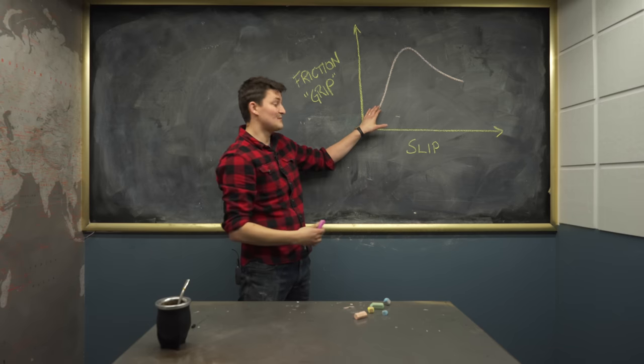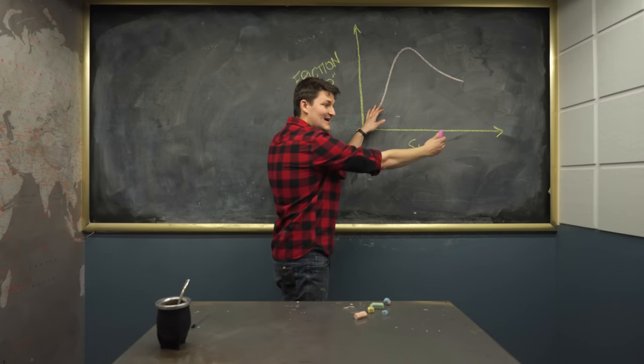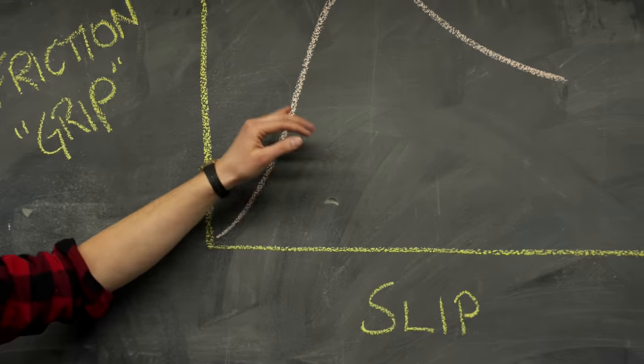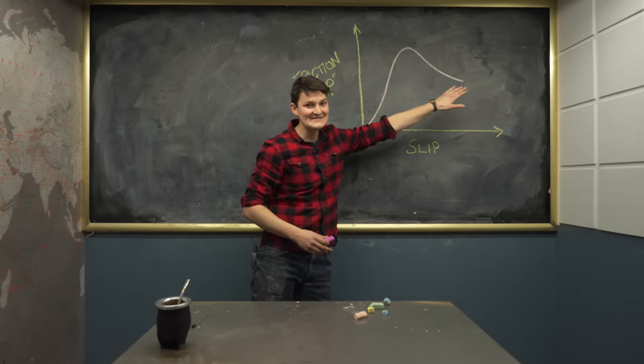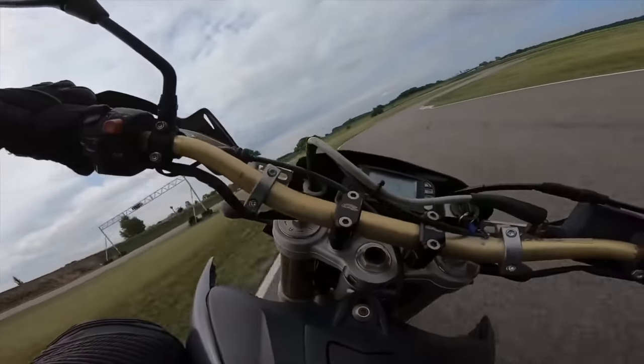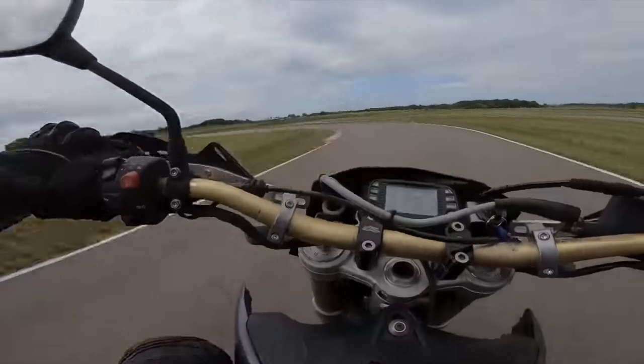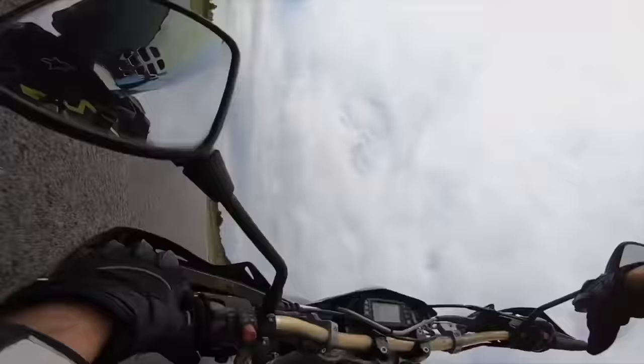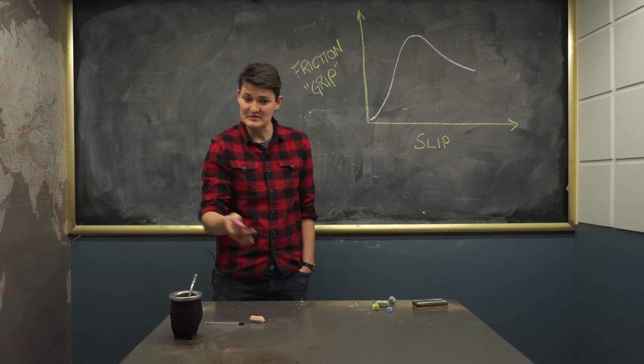A rolling tire has some friction. A slightly sliding tire actually has more. Then more. Then more. Then suddenly less. It's hard to feel this point of diminishing return. But you'll know when you've hit it.